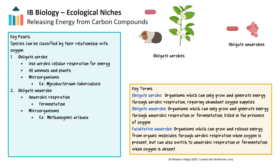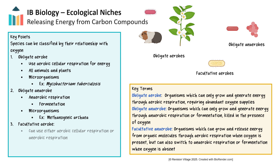The term facultative describes organisms that can survive with or without oxygen, depending on the circumstances. Facultative anaerobes, like the bacterium E. coli, can switch between aerobic and anaerobic respiration. Some E. coli strains aid human digestion and live in the low oxygen environment of our intestines. Because they can also survive in oxygen-rich environments, they're widely used in lab experiments. While most strains are harmless, some are pathogenic — you may hear about occasional outbreaks caused by harmful E. coli.